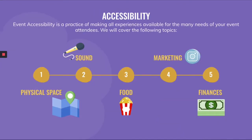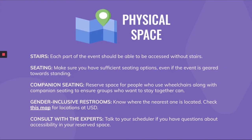Now we're going to move into talking about accessibility. As event planners, we should always be striving to create experiences in which people can participate and feel the event was truly made for them as an individual. Accessibility means making all experiences available for the many needs of your event attendees. We'll be talking about five topics for accessibility: physical space, sound, food, marketing, and finances. For physical space, make sure each part of the event can be accessed without stairs, have sufficient seating options even if your event is mostly standing room, and provide companion seating for people who use wheelchairs so their groups can stay together.